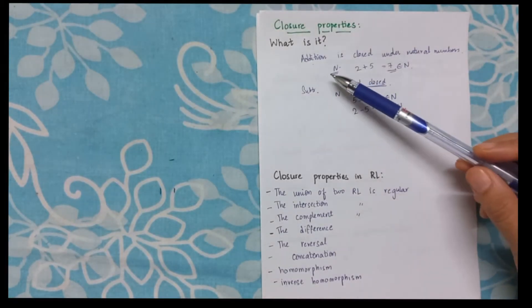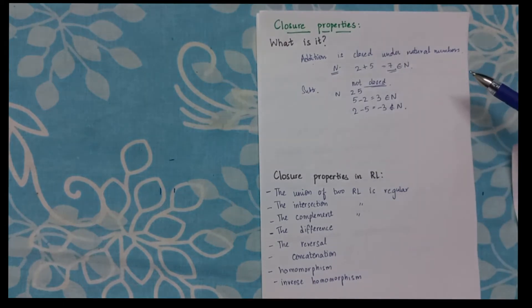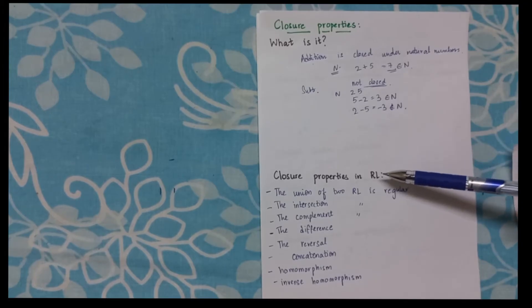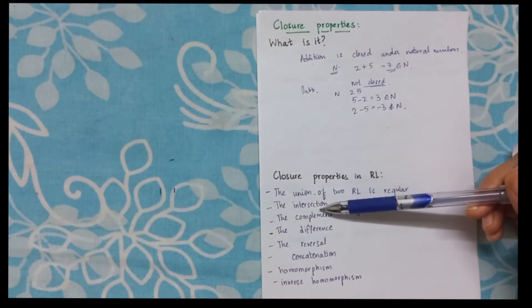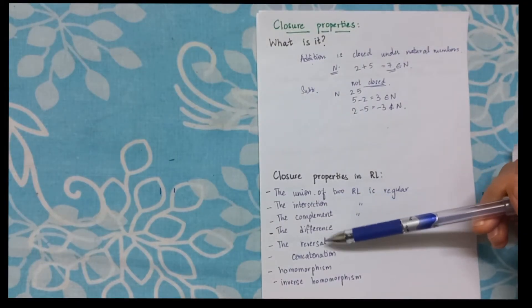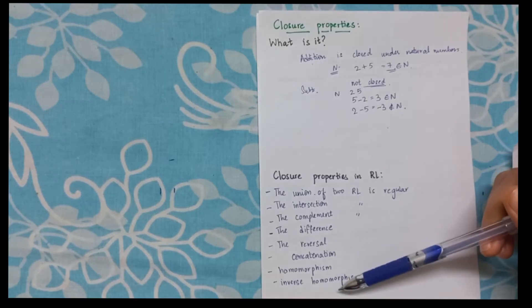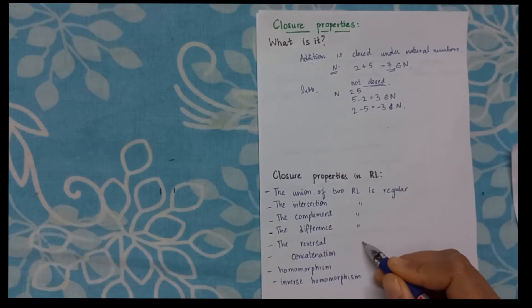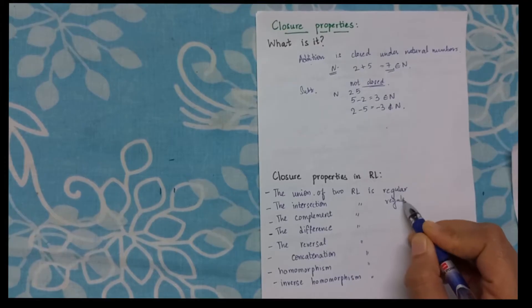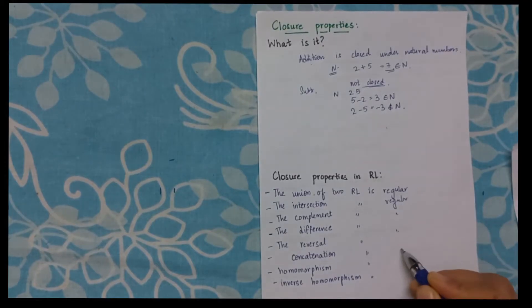That is I say the operation is closed under that particular set. So here under finite automata what am I discussing? I am discussing if I have 2 regular languages and I apply either union, intersection, complement, difference, reversal, concatenation, homomorphism and inverse homomorphism. I discuss about these operations. So if I apply these operations, are these regular? For regular languages, all these are true. That is the operations are closed under regular languages.